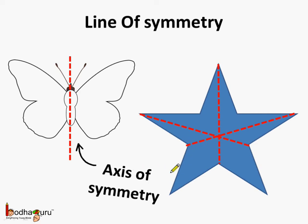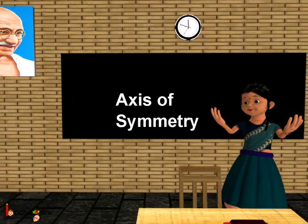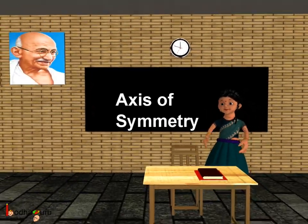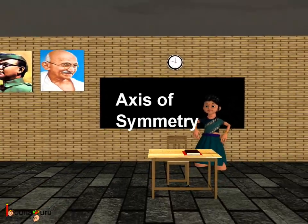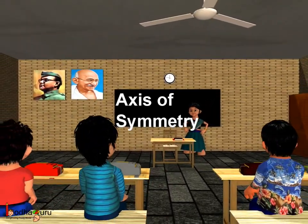Like the blue star we showed, there are three lines of symmetry, or three axes of symmetry. So that was all about symmetry. Bye-bye children. Thank you very much.